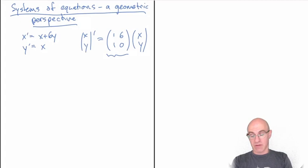What you should find is that the eigenvalues are minus 2 and 3. The eigenvector associated with eigenvalue minus 2 is going to be (-2, 1). Now you may find a scalar multiple of that, but any scalar multiple of that will do.